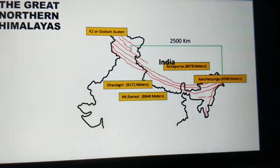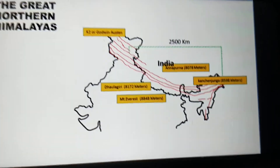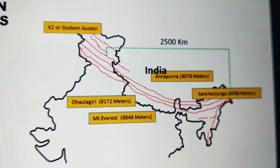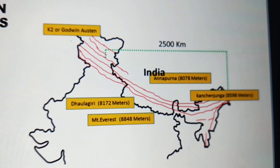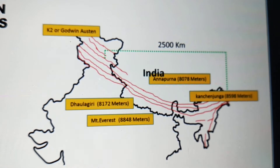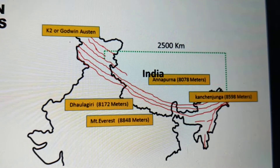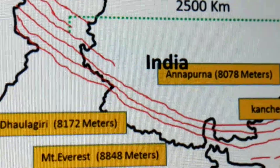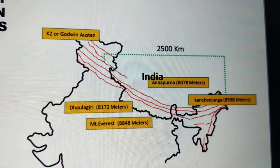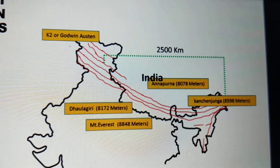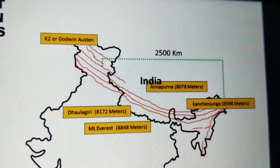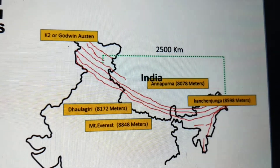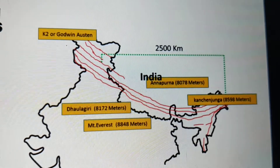The last is the great northern Himalayas. Here you can see K2, or Godwin-Austen, on the northern part with a height of 8,611 meters. On the right-hand side is Kanchenjunga with a height of 8,598 meters. Above it is Annapurna mountain at 8,178 meters. In the central part of India you have Mount Everest with a height of 8,848 meters.